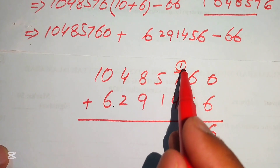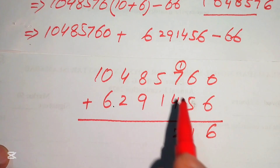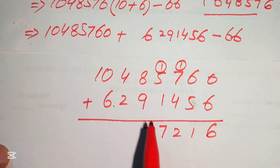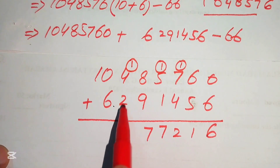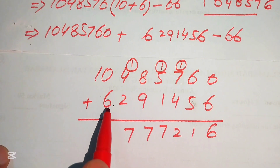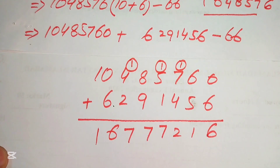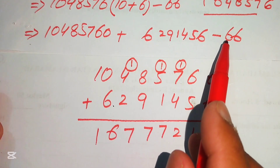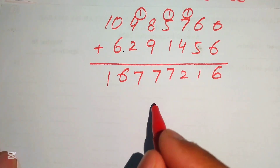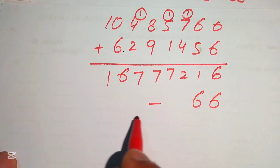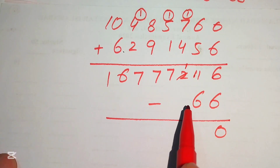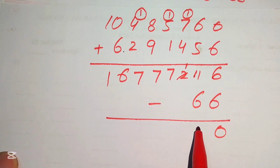Continuing the addition: 7 plus 1 is 8, plus 4 is 12 — write 2 carry 1; 5 plus 2 is 7; 9 plus 8 is 17 — write 7 carry 1; 4 plus 2 is 6, plus 1 is 7; then 6 and 1. The sum is 16,777,216. Then subtracting 66: 6 minus 6 is 0; borrowing gives 11 minus 6 is 5; continuing yields 16,777,150.